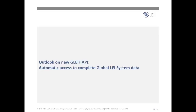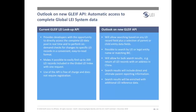Thank you, Christoph. GLEIF is also working towards the launch of a new API in 2019. In September 2017, we launched the GLEIF LEI Lookup API, giving developers direct access to the complete LEI data pool in real time to enable on-demand checks for changes to specific LEI records. The API makes this data convenient to access and easy to read, responding to the need of LEI stakeholders to include LEI data in automated processes. The current live LEI Lookup API makes it possible to submit one request for up to 200 LEI records included in the global LEI index.